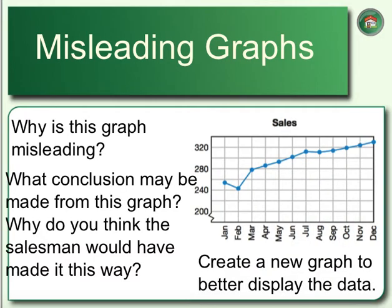Lastly, why is this graph misleading? First, we have a broken graph, which is not always the worst, but we're only going from January to December. Maybe we need more information from a few different years to show a sales trend. It also makes it look like we have some huge jumps from January to February, and then growing like crazy after that — when really we started out at about 255 in sales, all the way up to 320. That's not a huge difference throughout the year, but they make it look bigger than it is.